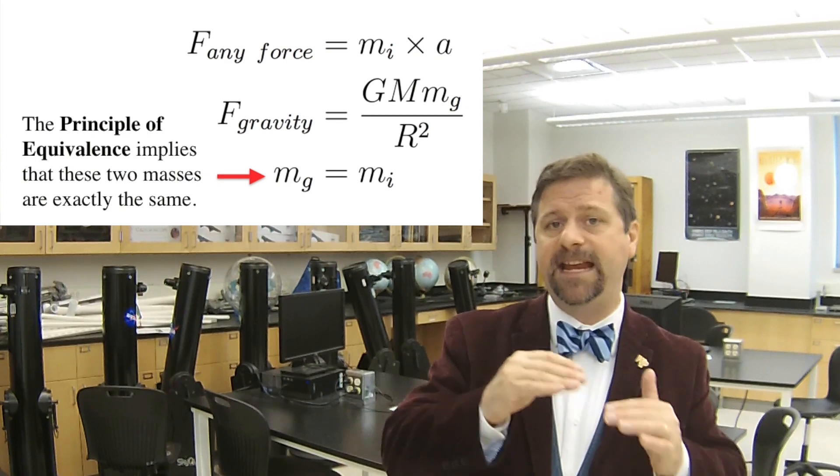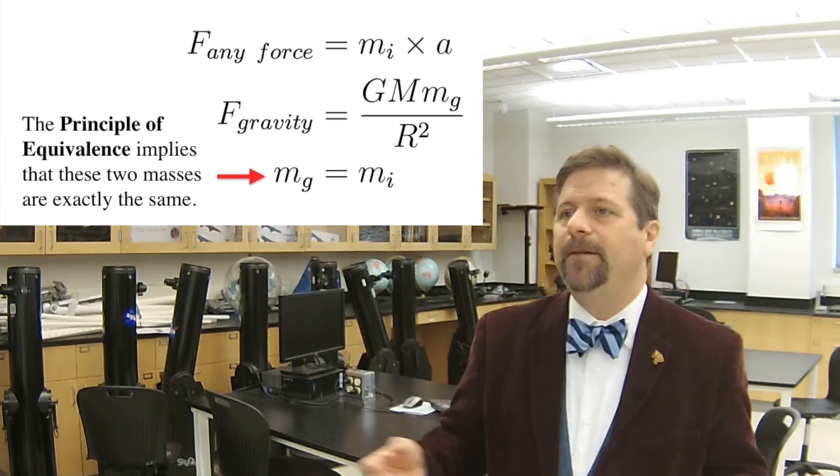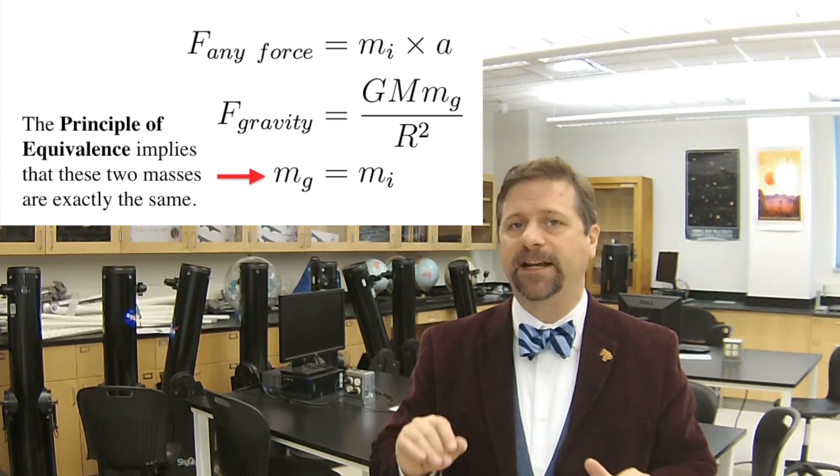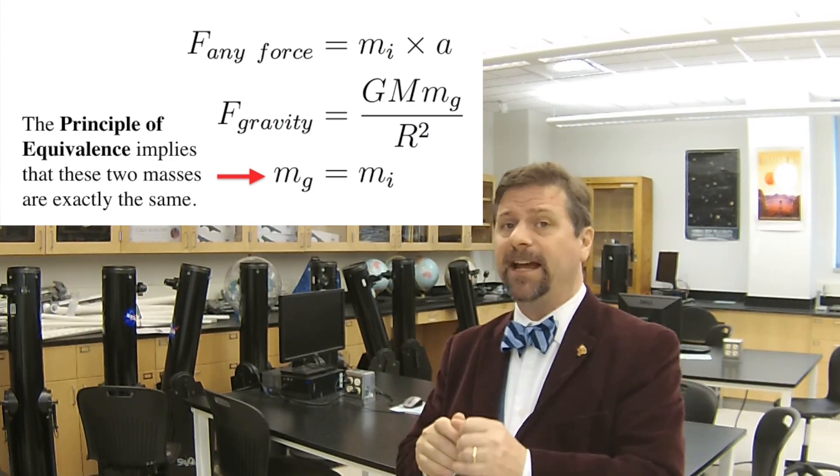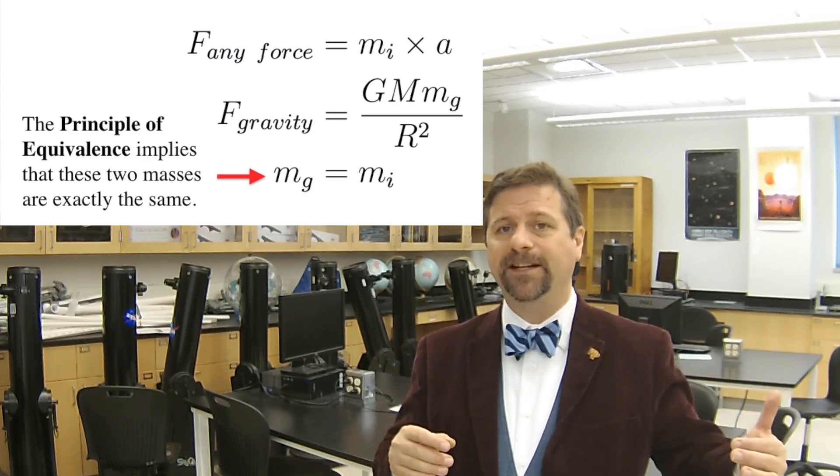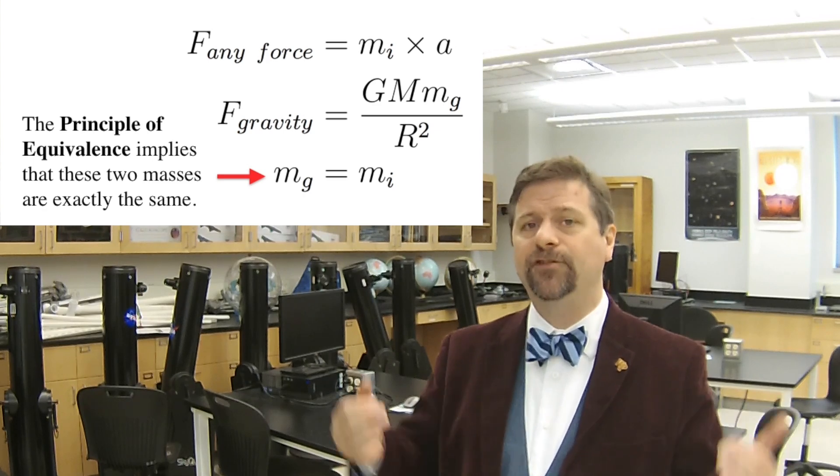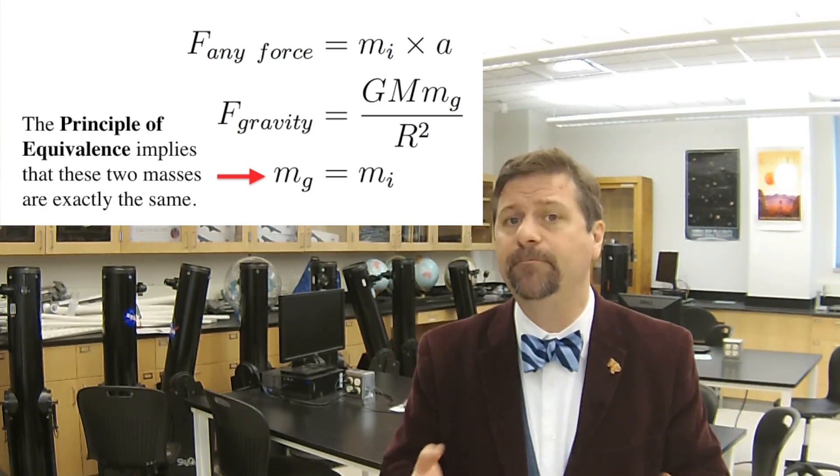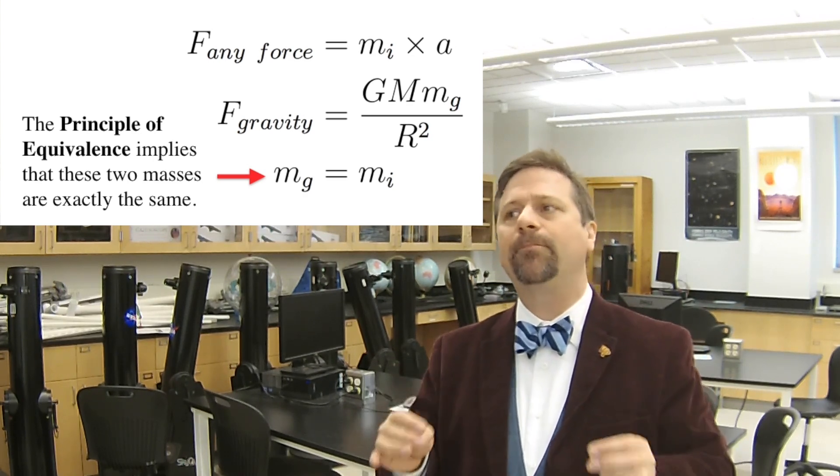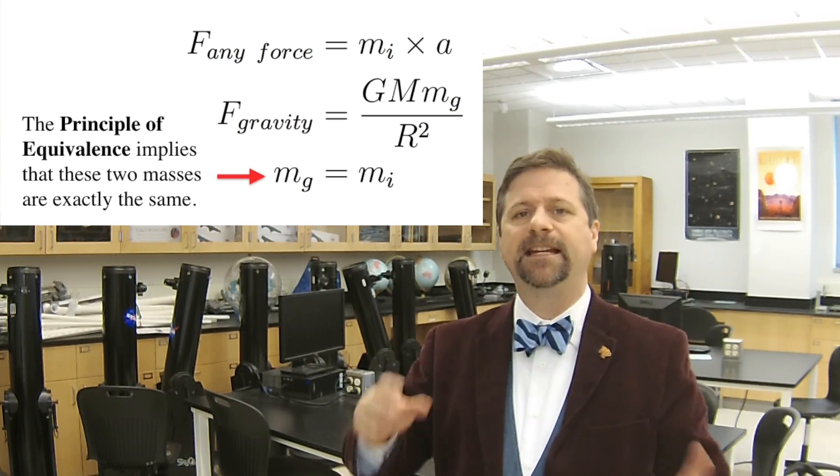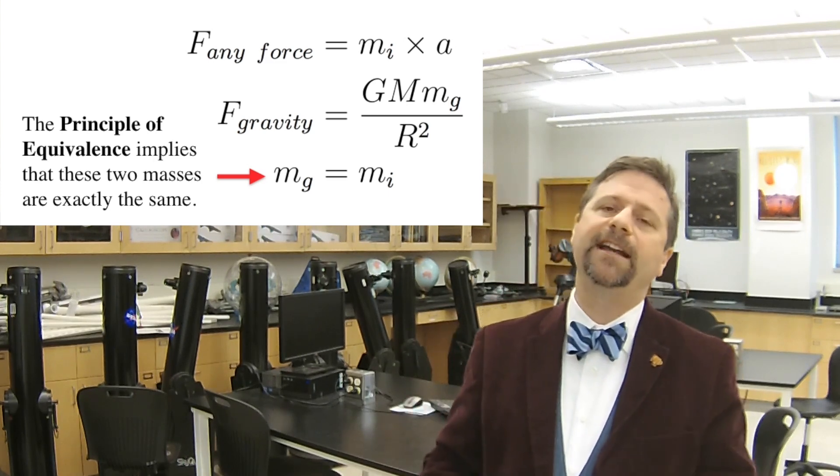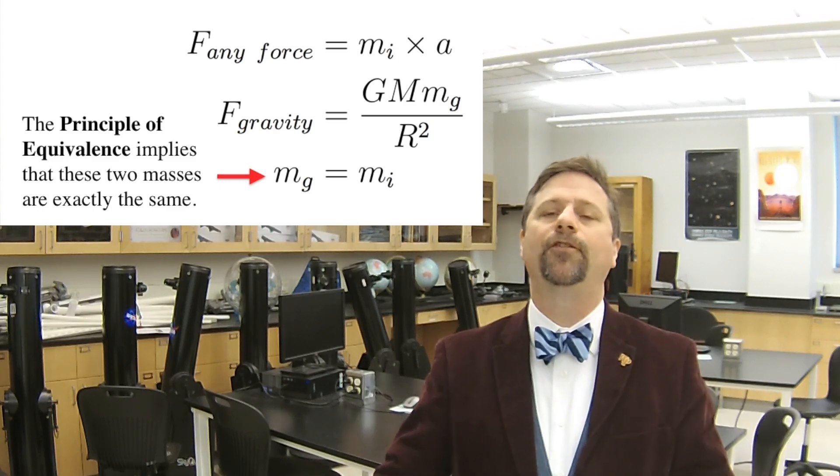Einstein in 1907, to start down the road of general relativity, made a postulate: the inertial mass is the same thing as the gravitational mass. That might not sound like a big deal, but think about how you can accelerate things without using gravity, and you can balance a force due to gravity by something that is not due to gravity. There was no a priori reason for them to be the same, but Einstein said: let's make them the same.